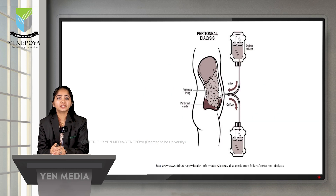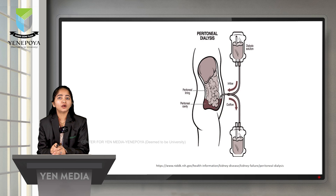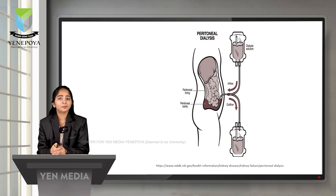The peritoneal dialysis procedure has three phases: first, inflow, where the dialysis solution is infused into the peritoneal cavity via catheter; second, the dwell phase, where unwanted substances are removed from the patient's body; and third, outflow, where all the toxins and excess fluid are drained from the patient's body.